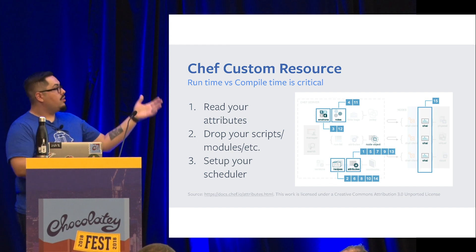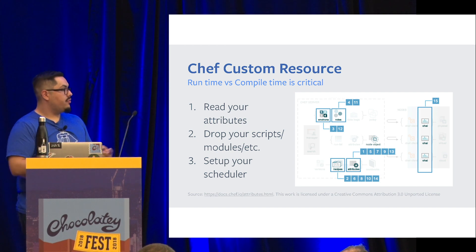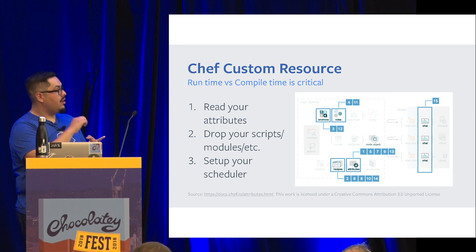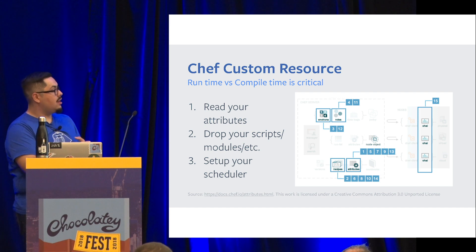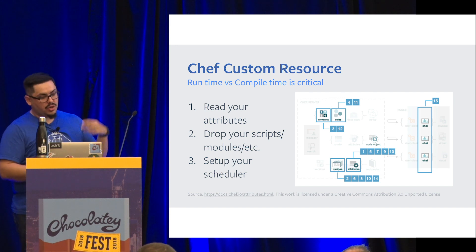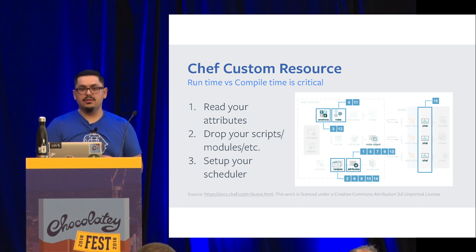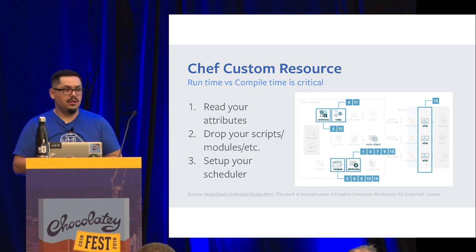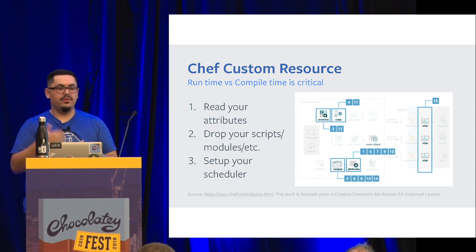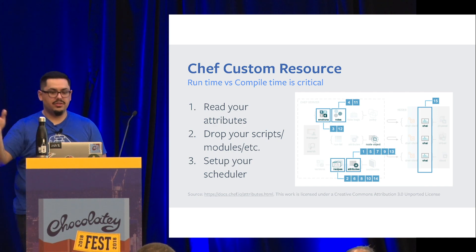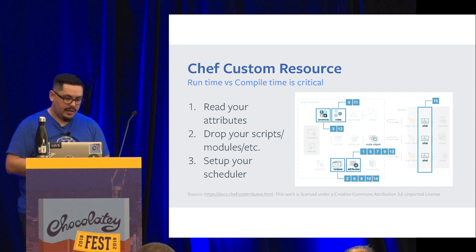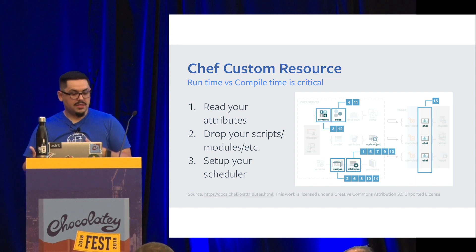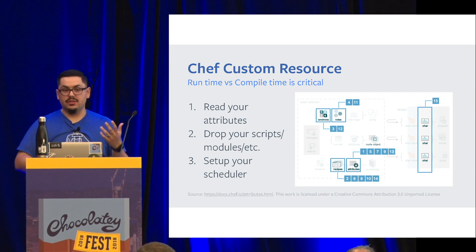Now that we're reading our attributes from our default attributes and allowing overwriting with our recipes, we can start dropping scripts, dropping any binaries, any tools that you might use — maybe you have a piece of code that calls out to a Slack channel or something like that. And last but not least, we set up a scheduler.